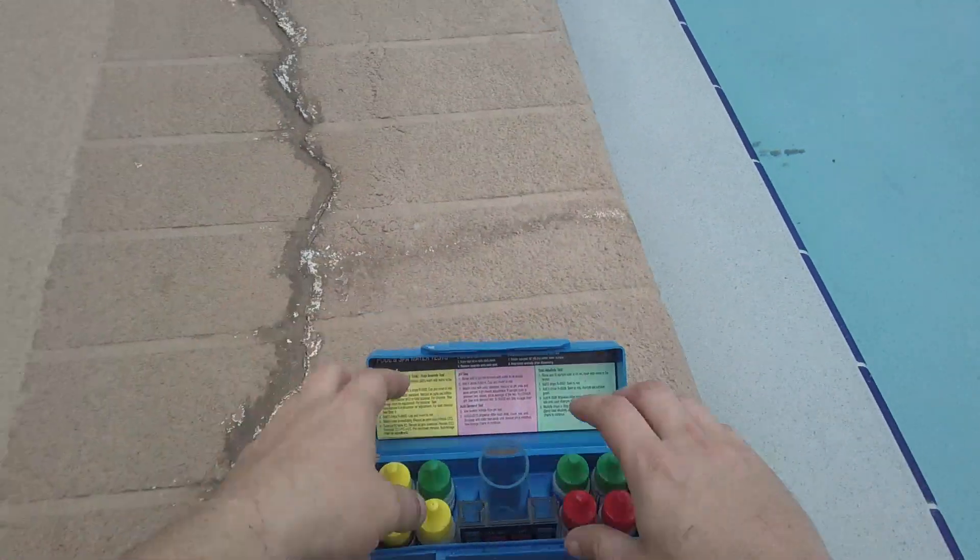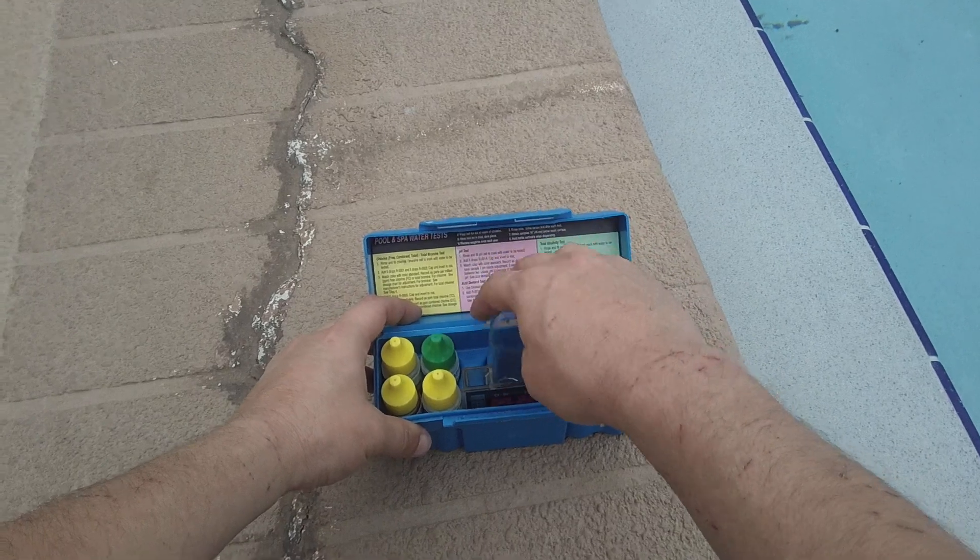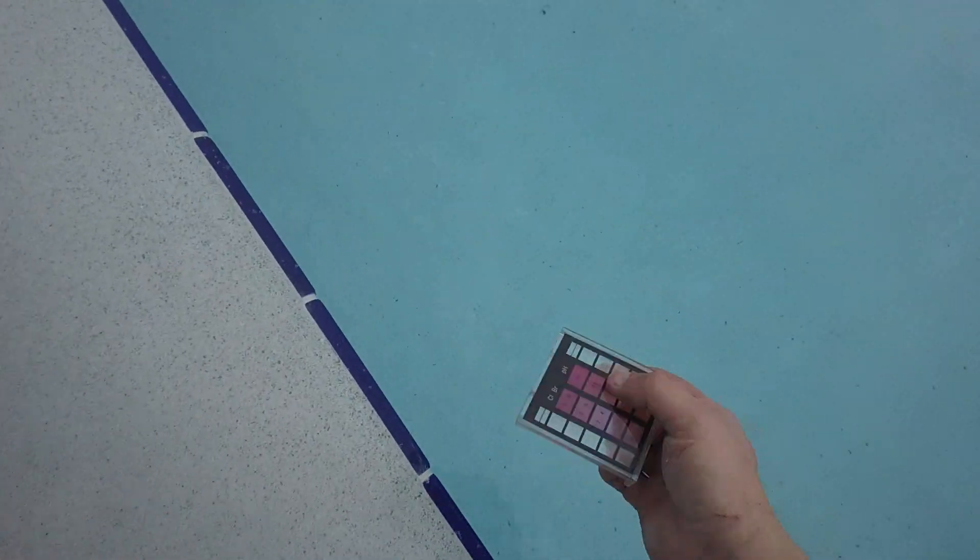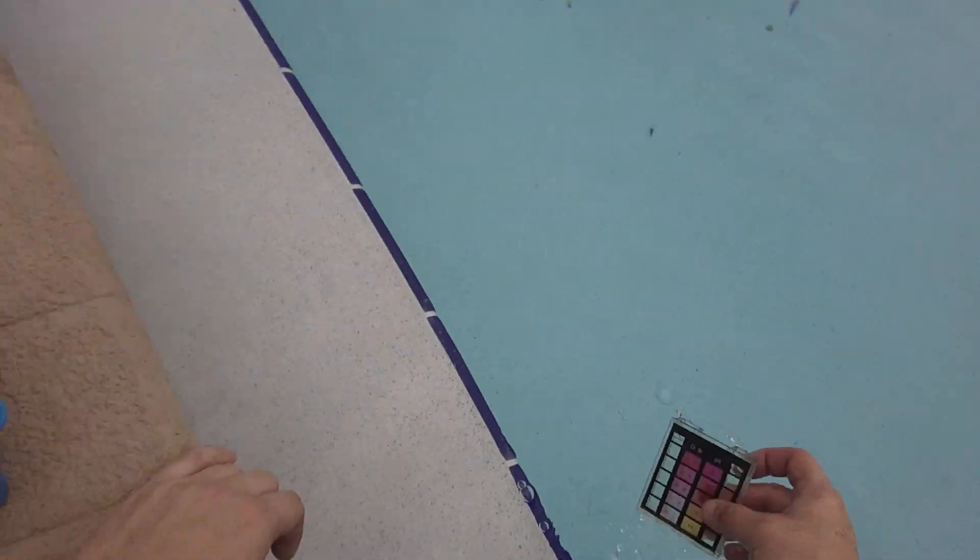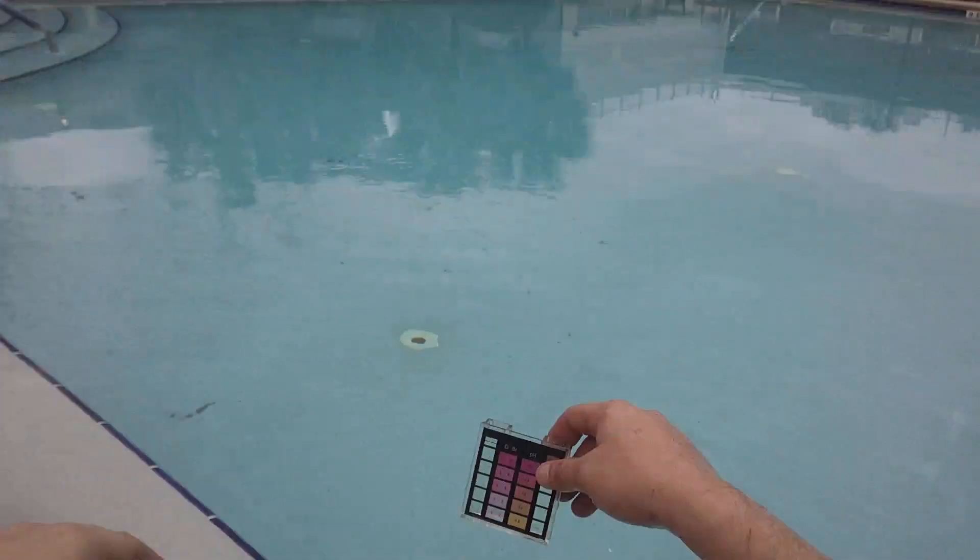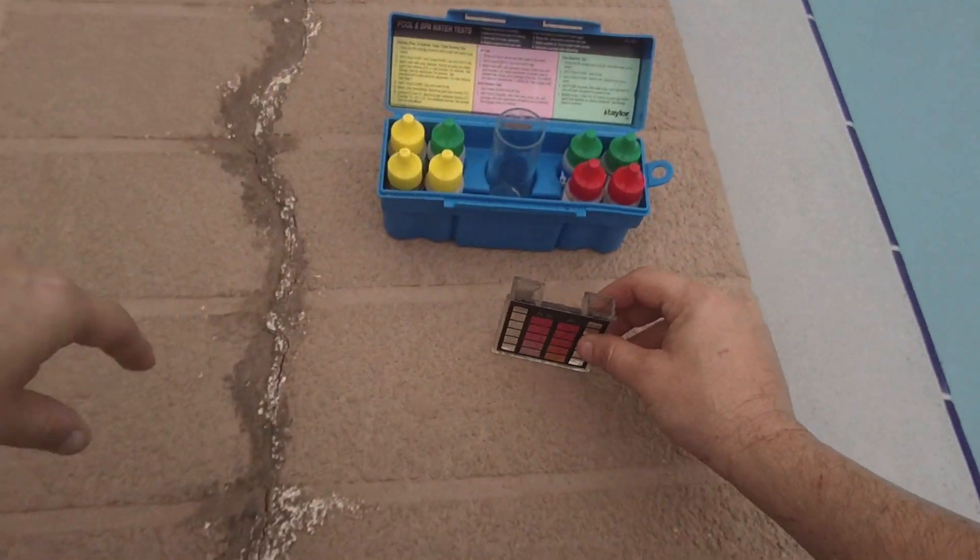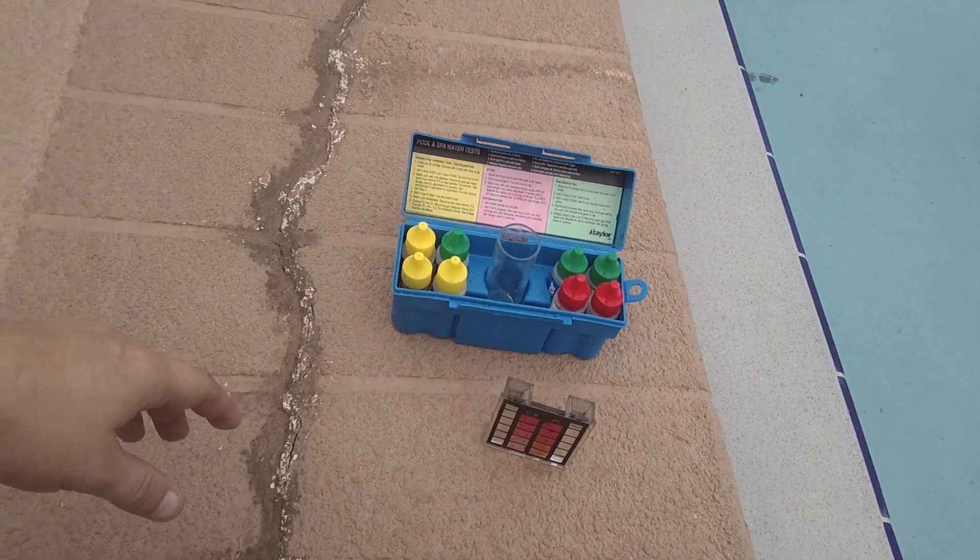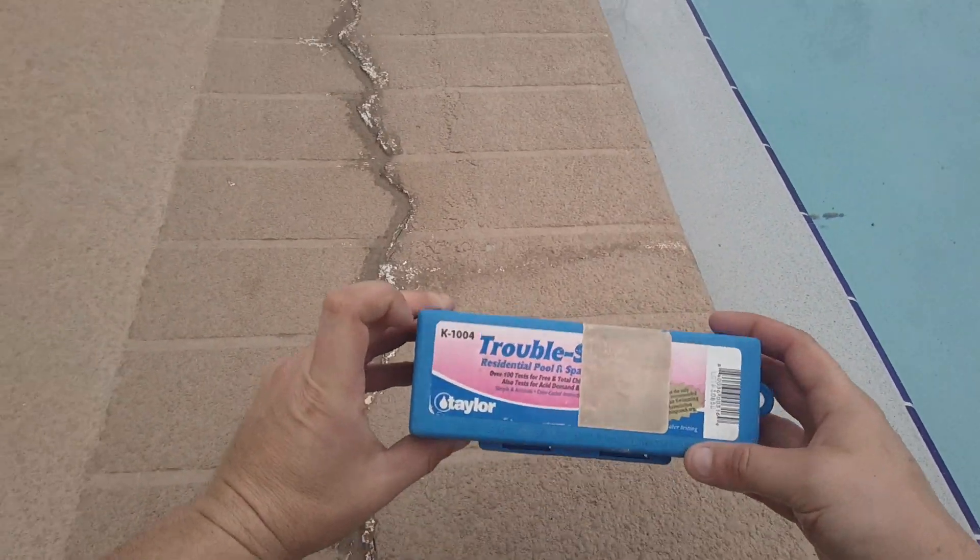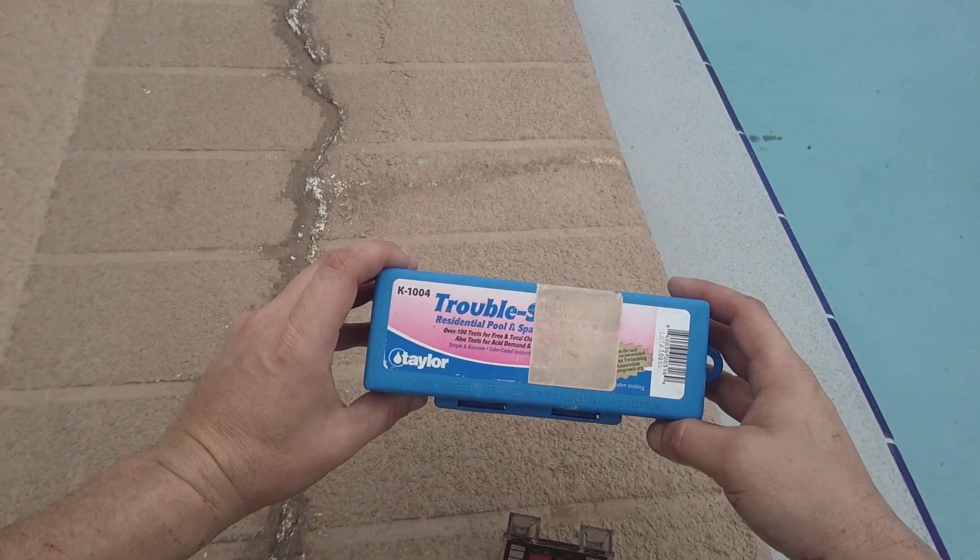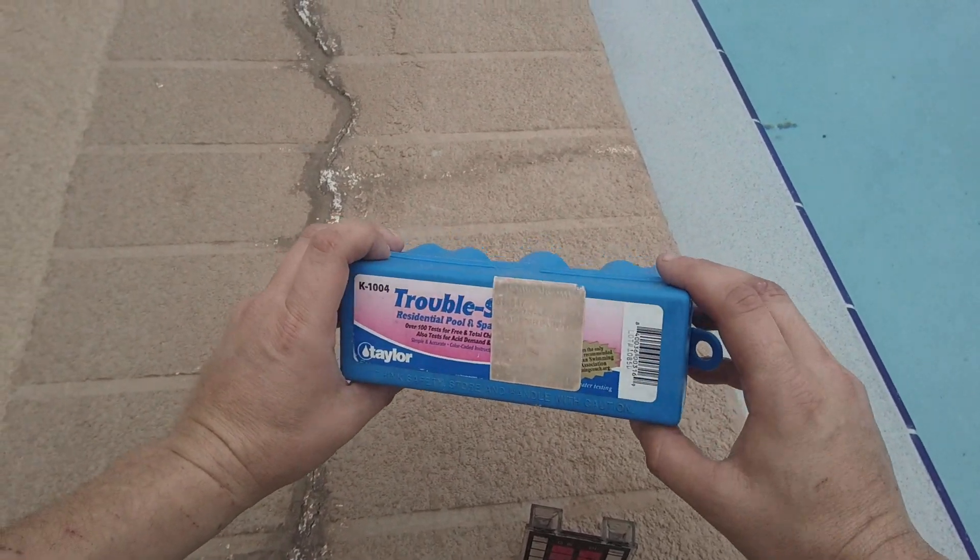Hey, Jeff the maintenance man here, doing some pool testing. Let's see what we got. This is kind of how you do it - go deep, turn this up. Let's see how my chlorine and pH is doing. This kit is the K-1004 Taylor makes it. I'll put a link in the description where you can get this one.